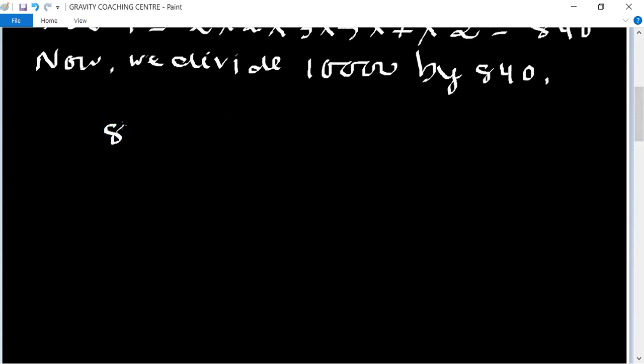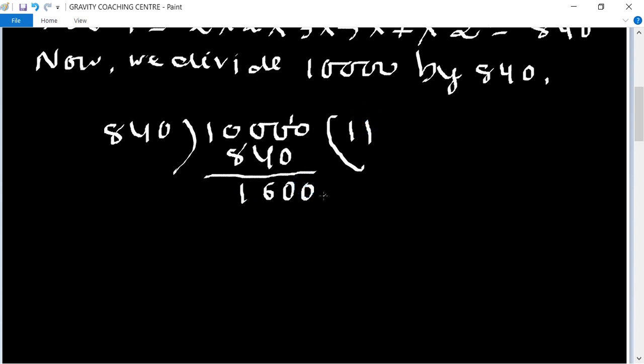So 10,000 divided by 840. First we take the table of 1 times this one: 840 minus 0, 6, 1. And now again 840, 1 times 840, and its difference is 760, which is the remainder.